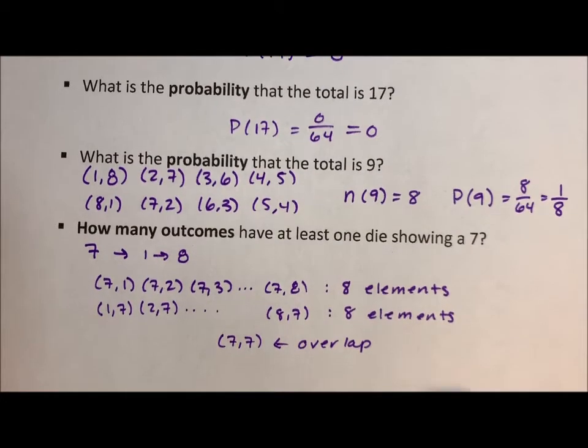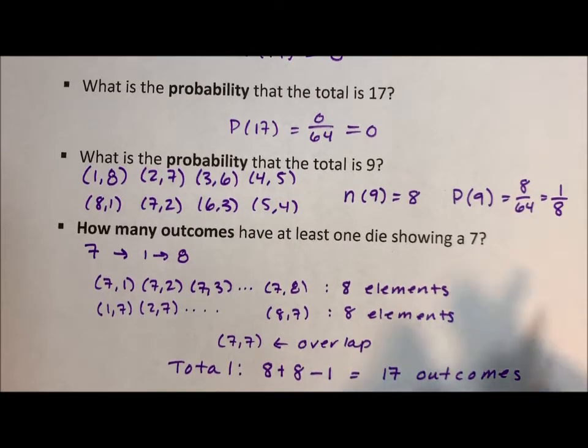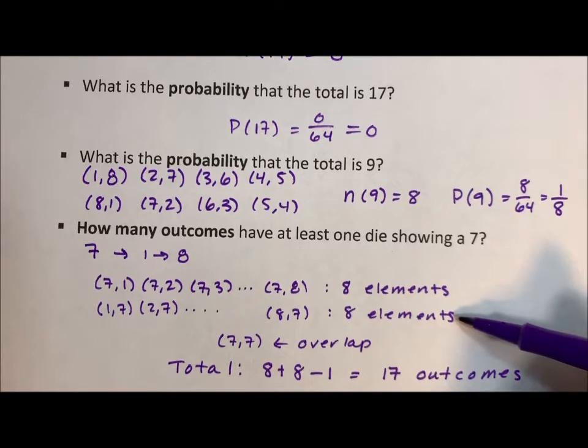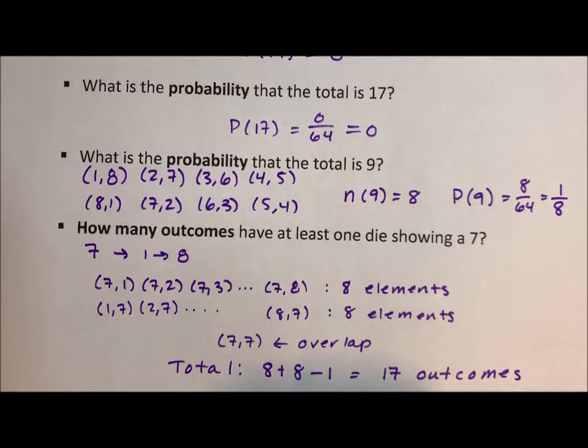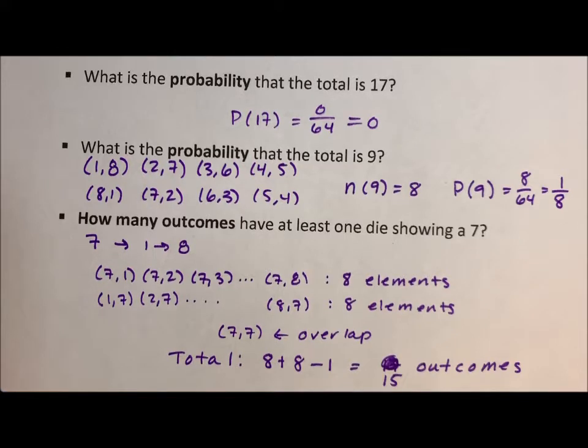So the total is 8 plus 8 minus the overlap. That's 8 from the first die, 8 from the second die, minus 1 for the overlap, which equals 15 outcomes. So there are 15 possible outcomes for rolling two dice and having a 7 show on at least one of them.